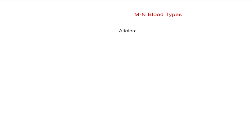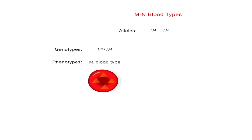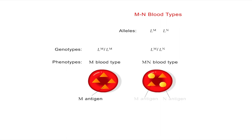An example is the human MN blood group system. The MN alleles result in the formation of antigens on the red blood cell surface. There are two alleles in the MN system: LM and LN. These alleles combine to form three blood types — M, MN, and N — determined by the genotypes LM-LM, LM-LN, and LN-LN, respectively.